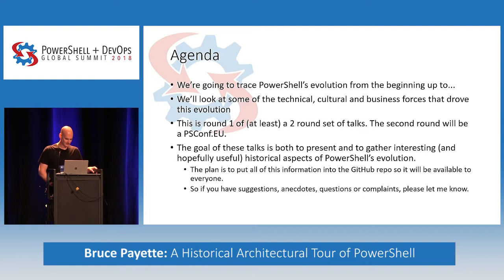I want to look at some of the cultural, technical, and business forces. There are artifacts in the source code that have been impacted by some business decisions in the past. The ultimate goal is to gather all this information into a document on GitHub as part of a contributor's package, so people can deeply understand what we're doing with PowerShell and why, and more easily evolve the language in a coherent way.